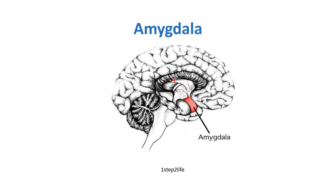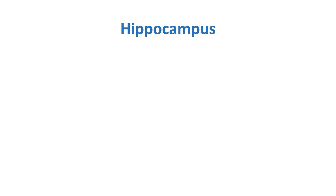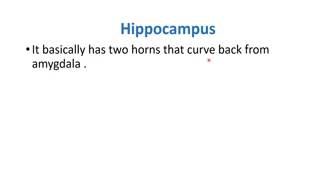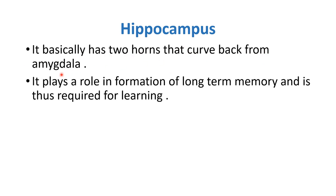Looking at the diagram, you can see the hypothalamus, and the red highlighted structure inside the brain represents the amygdala. The last part of the limbic system is the hippocampus. It has two horns that curve backwards from the amygdala. It plays a role in the formation of long-term memory and is therefore important for learning. If asked which part of the brain plays an important role in learning, the answer is the hippocampus.